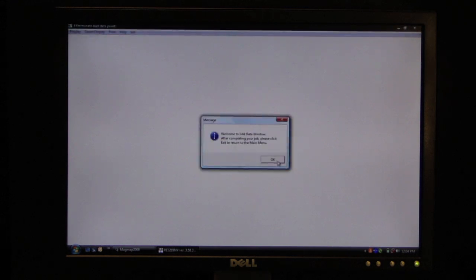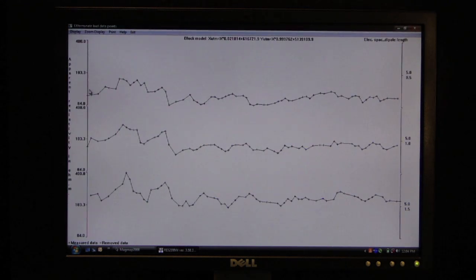Now, generally the first thing you'll want to do is actually look at the raw data. So we can go to Edit, and do Exterminate Bad Data Points. And what we see, we see all three lines. I'm sorry, this is a single line, all three receivers at different depths on that line.